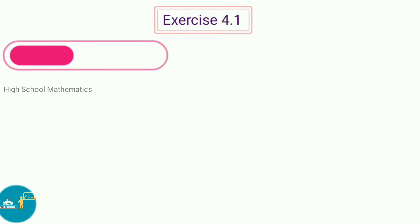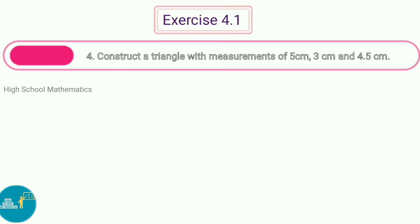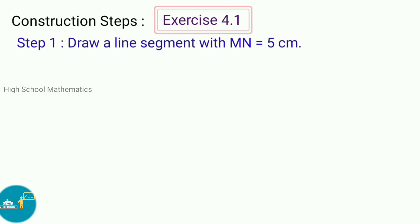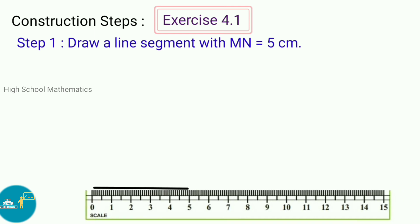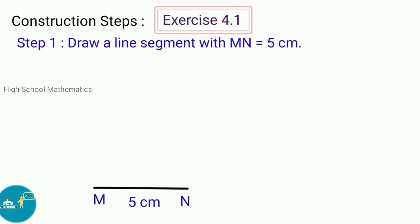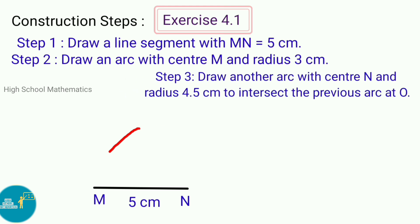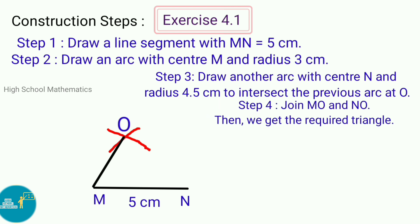Fourth sum: Construct a triangle with measurements of 5 cm, 3 cm, and 4.5 cm. Construction steps — Step 1: Draw a line segment with MN equal to 5 cm. Step 2: Draw an arc with center M and radius 3 cm. Step 3: Draw another arc with center N and radius 4.5 cm to intersect the previous arc at O. Step 4: Join MO and NO. Then we get the required triangle.